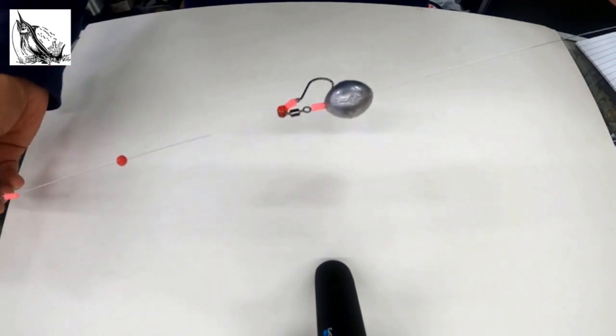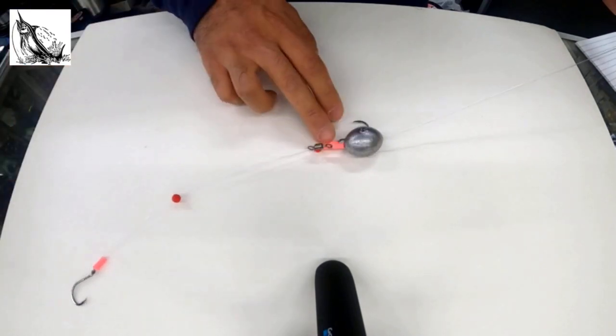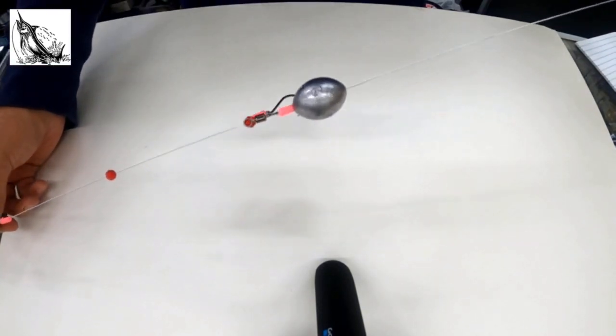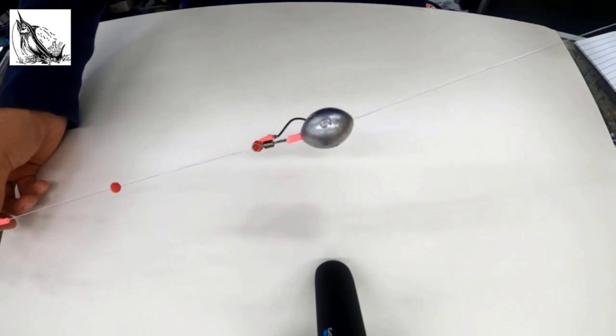What happens is the one hook will be in the fish's mouth, the other hook up here is now in line with your main leader line. So the chances of it hanging up are reduced significantly, and you're able to hang up less and land more fish when you're fighting big fish.